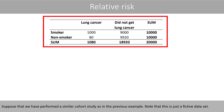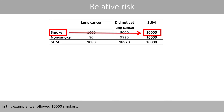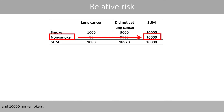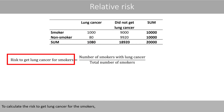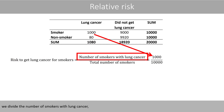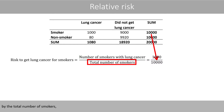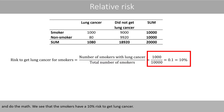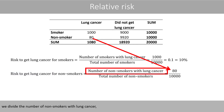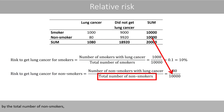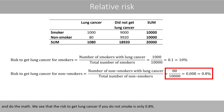Suppose that we have performed a similar cohort study as in the previous example. Note that this is just a fictive dataset. In this example, we followed 10,000 smokers and 10,000 non-smokers. 1,000 got lung cancer out of the 10,000 smokers, whereas only 80 out of the 10,000 non-smokers got lung cancer. To calculate the risk to get lung cancer for the smokers, we divide the number of smokers with lung cancer by the total number of smokers and do the math.